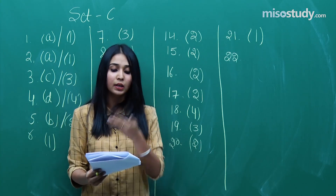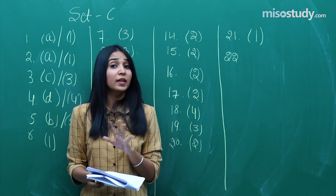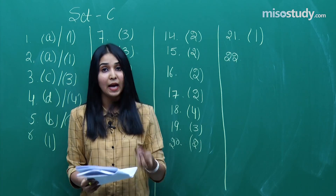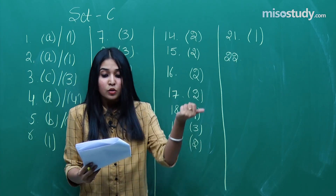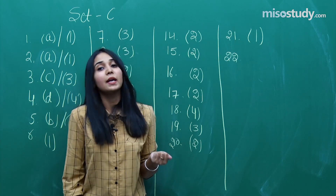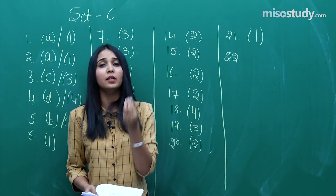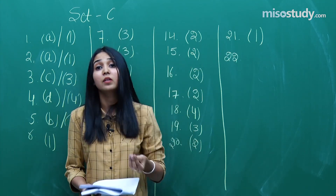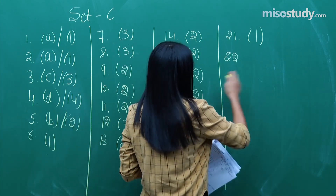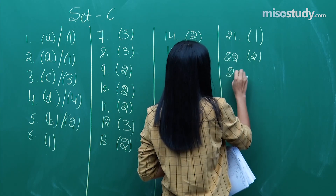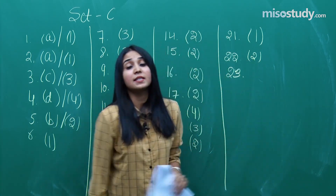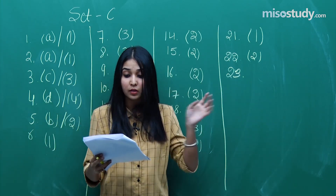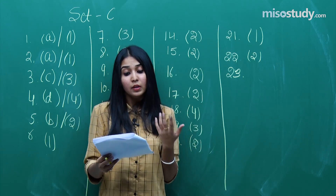Question number 22 was from the hydrocarbons chapter in organic chemistry — a really direct question. Generally we don't expect easy questions from organic, so this was a surprise. It came from the initial beginning phase covering basic reactions. The correct option for question 22 is option 2 — and yes, option 2 is very popular in the chemistry section this time.